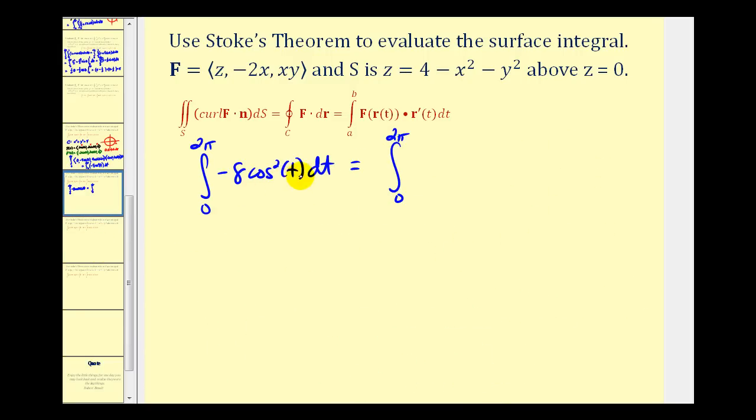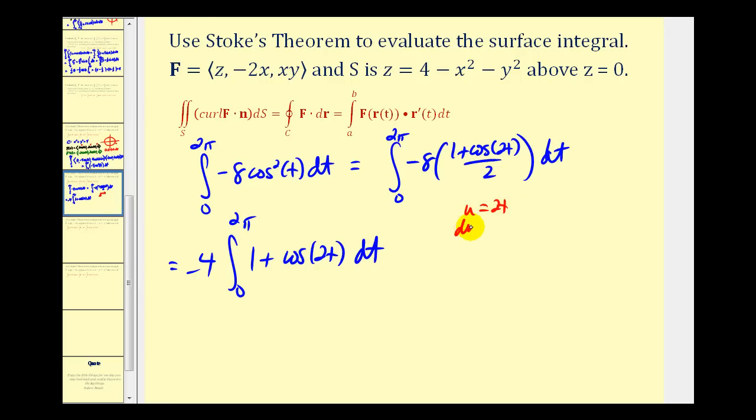Let's go ahead and apply our power reducing formula here for cosine squared T. So we'll have negative eight, one plus cosine two T, divided by two. So we're going to have negative four, and one plus cosine two T. Here we have a U substitution. So in converting to U, we have an extra factor of one-half. So we'll have T, plus one-half sine two T.